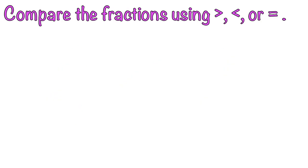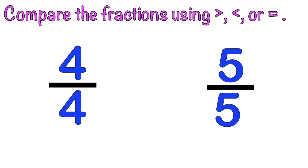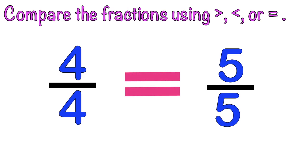How about if we have this: 4-fourths and 5-fifths? That's correct! It's equals. Why equals? Because 4-fourths is equal to 1, and 5-fifths is equal to 1. So, 1 is equal to 1.